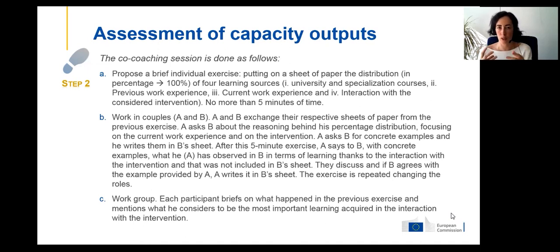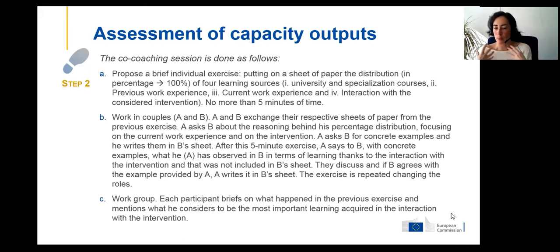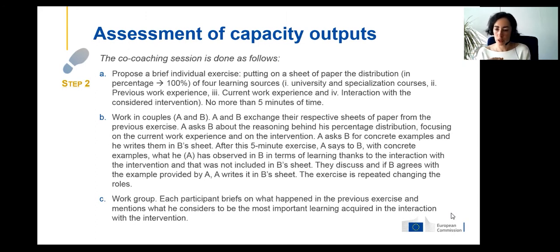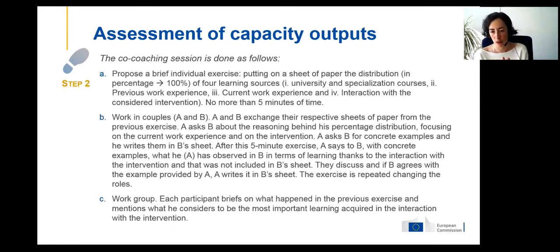We ask participants to assign a percentage — totaling 100 — to each of the four sources, indicating what level each source contributes to their current capacity. This first exercise is about five minutes. Then there is work in pairs — a minimum of four persons must participate in the co-coaching. Persons A and B exchange their filled sheets. A asks B about the reasoning behind the percentage distribution, focusing on the current work experience and interaction with the intervention, and asks B to provide concrete examples — which A writes down on B's paper.